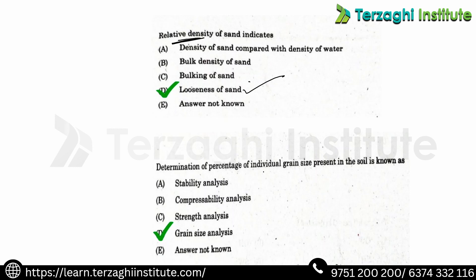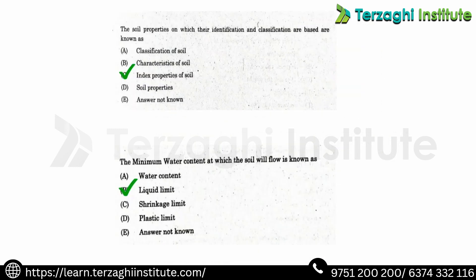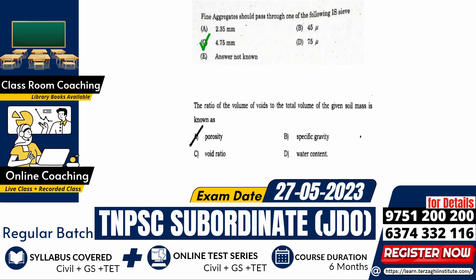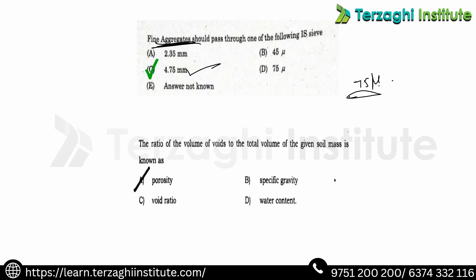Practice questions: determination of individual grain size is done by grain size analysis. Soil properties on which identification and classification are based are called index properties. The minimum water content at which soil will flow is known as the liquid limit. Fine aggregates should pass through 4.75 mm sieve, and material retained on the 75 micron sieve is classified as fine aggregates.